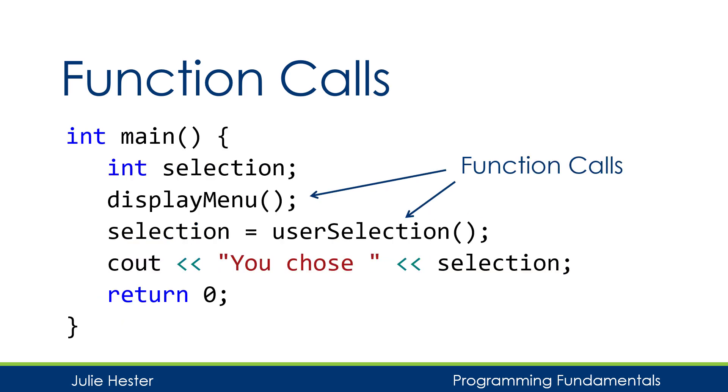So here is an example of a program that has two function calls. The first function call is a call to the displayMenu function. That function had no parameters and no return type, so we just put the name of the function and follow it with empty parentheses. The second function, userSelection, also has no parameters, but it returned an integer. So we're going to take whatever is returned by that function and save it in our integer variable selection. So in order to do this, we'll have the name of the function on the right-hand side of the equal sign, or assignment operator. After that function executes, that value will then be assigned to my variable selection.